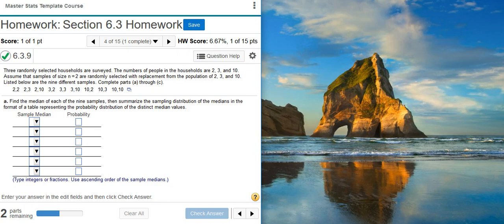Assume that samples of size n equals 2 are randomly selected with replacement from the population of 2, 3, and 10. Listed below are the 9 different samples. Complete Parts A through C.